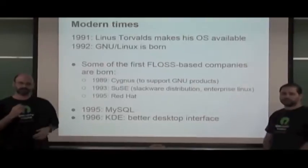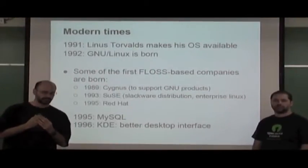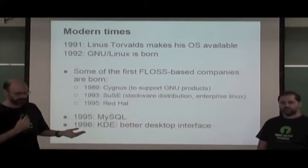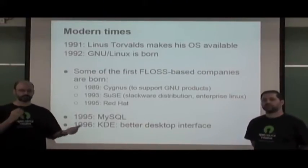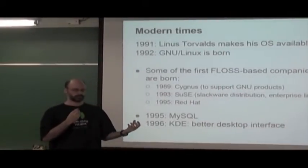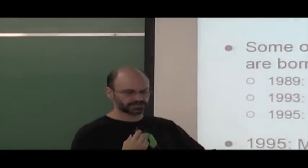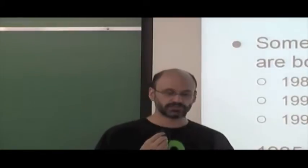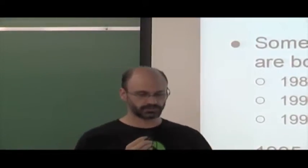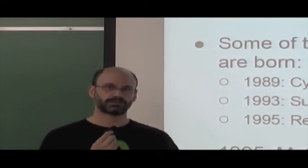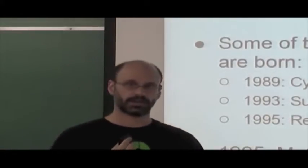This idea got a lot of momentum. In 1991, Linus Torvalds developed his operating system and made it available on the web. In 1992, the GNU/Linux operating system was born by combining the Linux kernel and GNU project tools. After that, the first open source-based companies started to appear — like Cygnus in 1989, founded to support GNU products, and Red Hat and SuSE in 1993 and 1995.